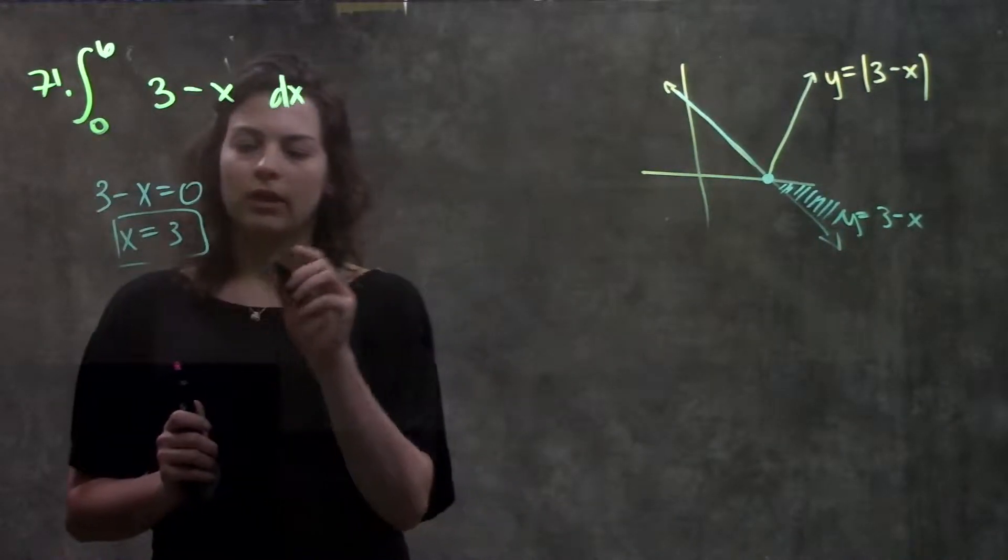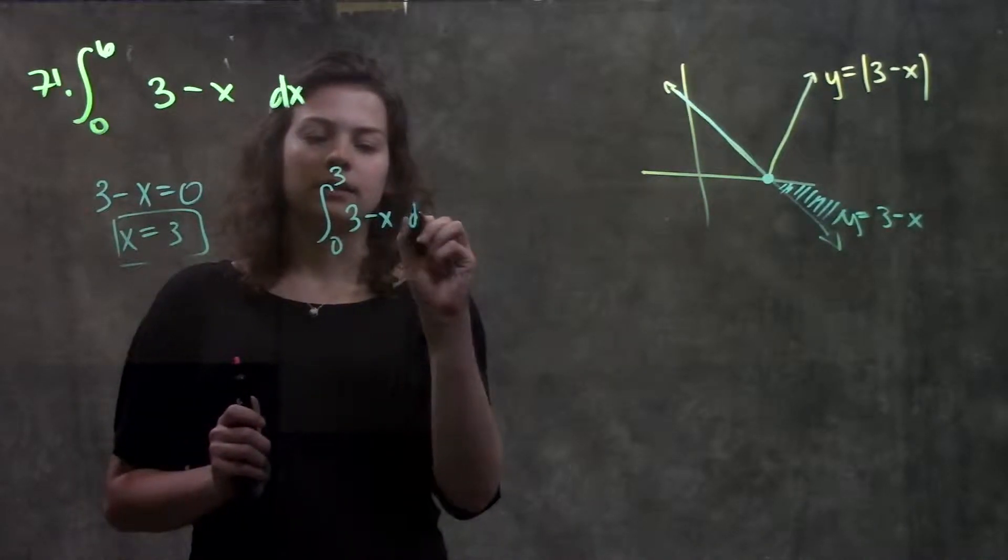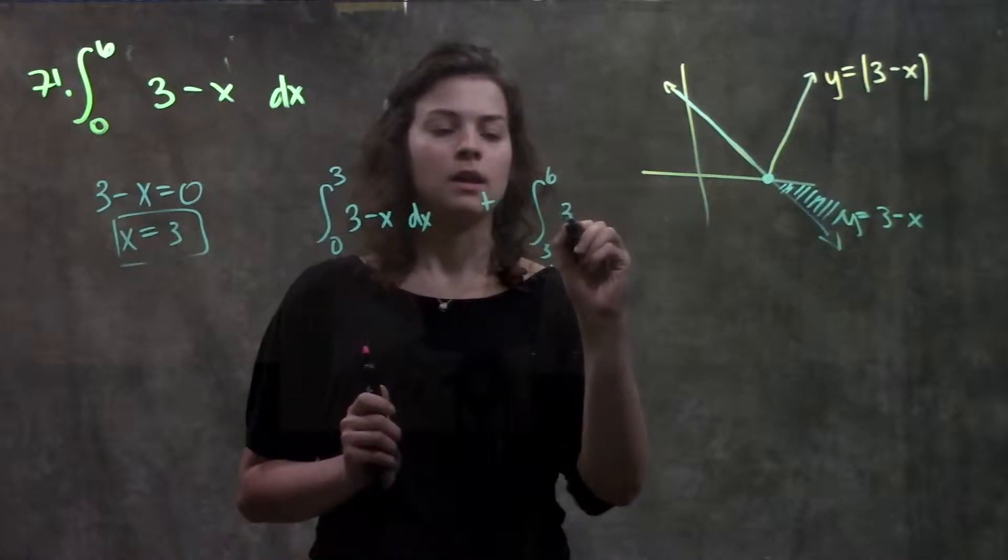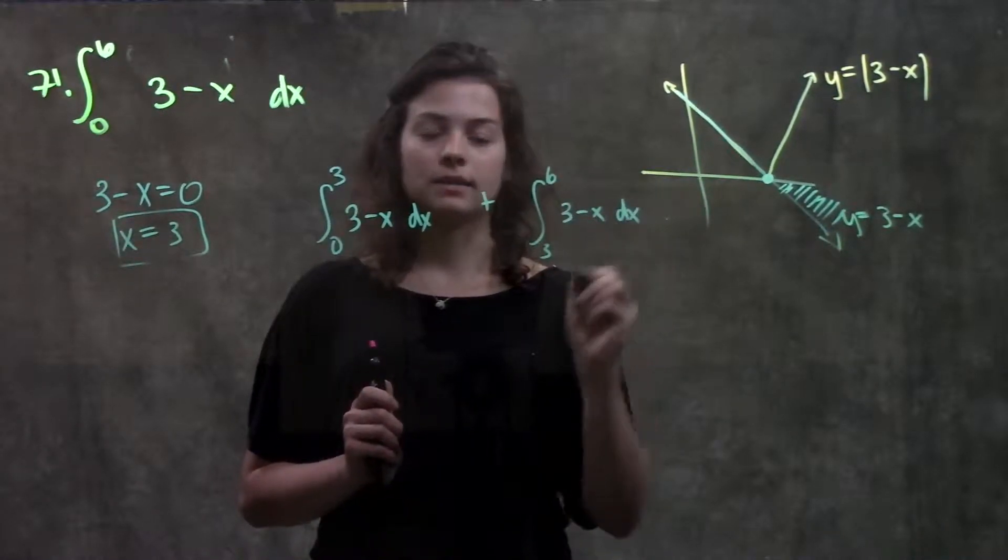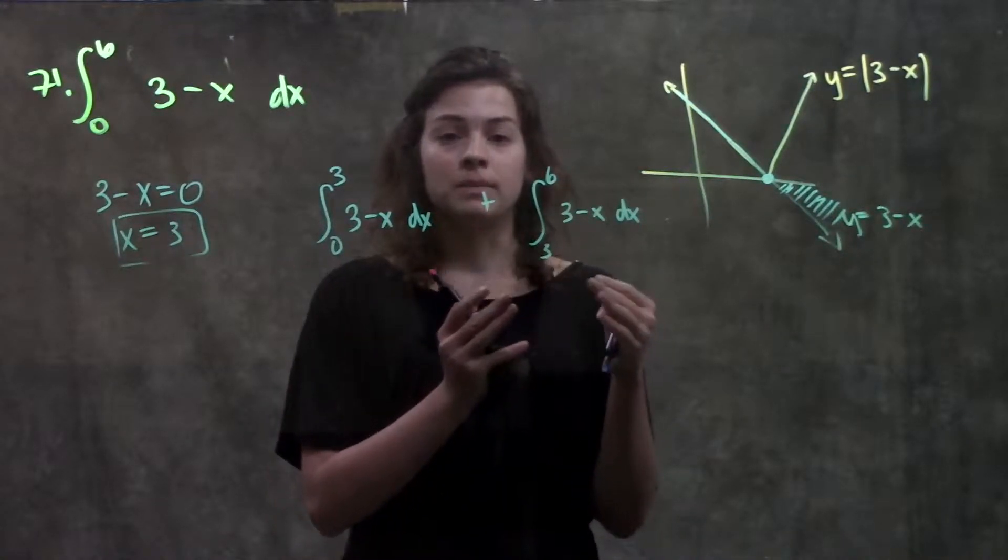So now I'm going to split my integral, so I have it from zero to three of three minus x dx, plus the integral from three to six of three minus x dx. And remember, I want both of these areas to be positive.